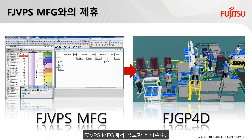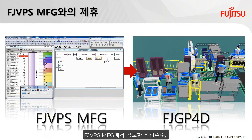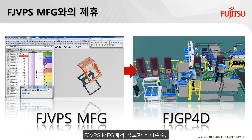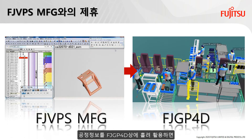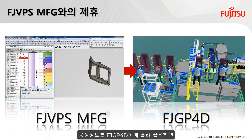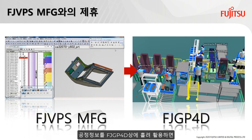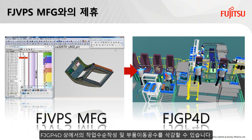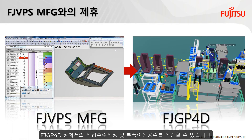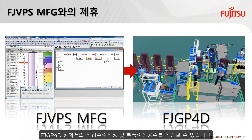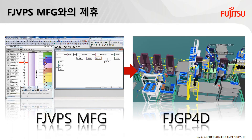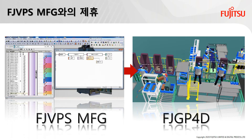By importing the operation procedure and process information simulated by FJVPS into FJGP4D and diverting it, it is possible to reduce the work procedure creation time and parts serving setting time on FJGP4D.